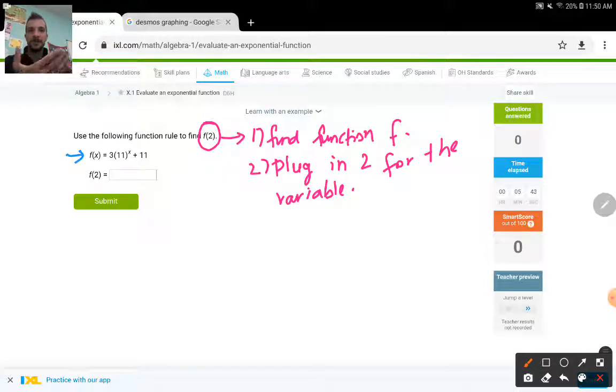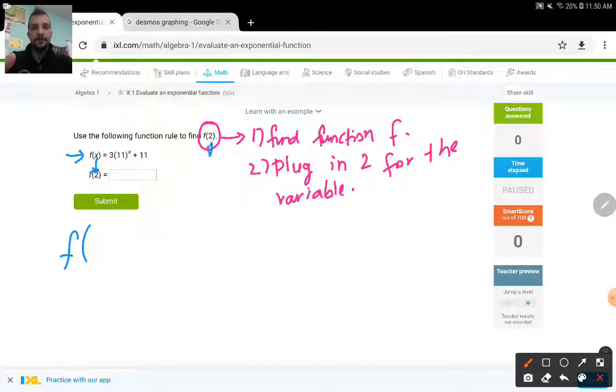Right now I want to plug in 2 because it says find the value of f(2). So I go to my function and start writing this again. So f(x), that's what I need to write. That's the first line. But now my x is going to become that number because that's what I need to find. So instead of f(x) I'm finding f(2), which means wherever I see that x I need to plug in 2. So let's continue writing this function. 3 times, I have parentheses 11, and then in the power I have an x but now there's no x anymore. It's just 2. It became 2 plus 11. I only had one x which I plugged in the 2 for.